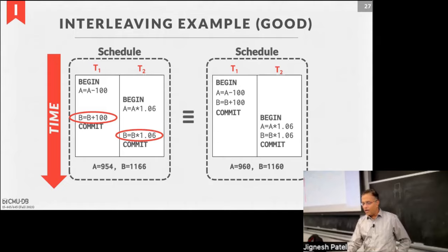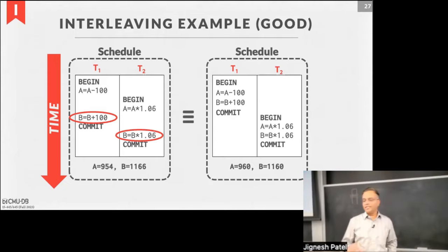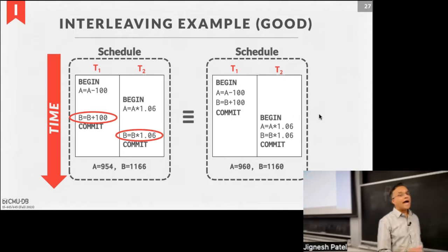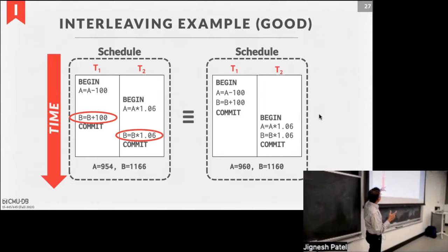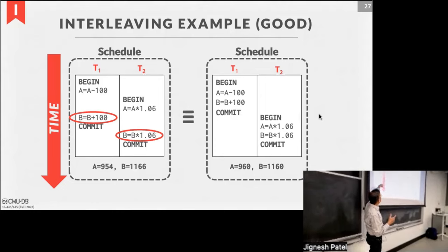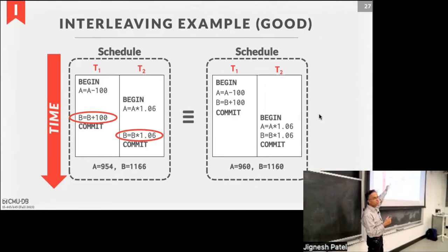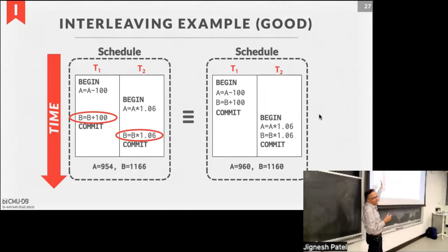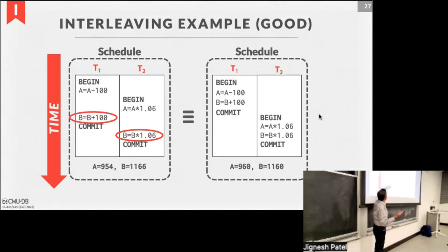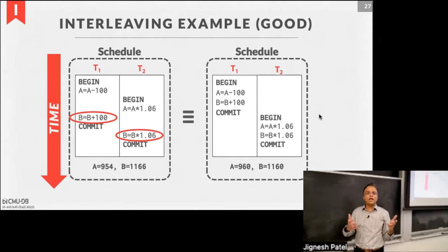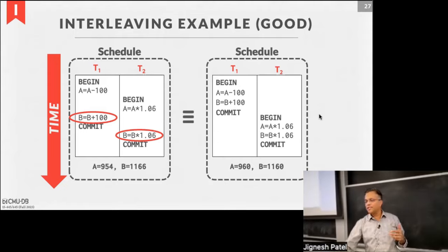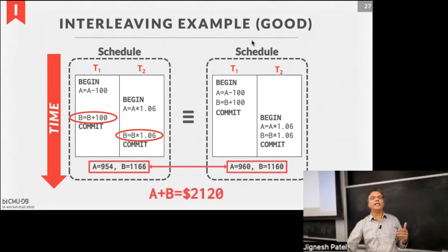So we are going to get started and needed to clean up a couple of things from last lecture. Remember this slide where we are looking at the interleaving when we are thinking about schedules. This schedule is actually a correct schedule, even though there is interleaving, because T1 makes a change to A, then T2 makes a change to A by giving 6% interest. T1 then comes back and makes changes to B, putting back the $100 from A to B. So now A and B — the sum of that is consistent. So when T2 goes and adds 6% interest to B, it is correct.